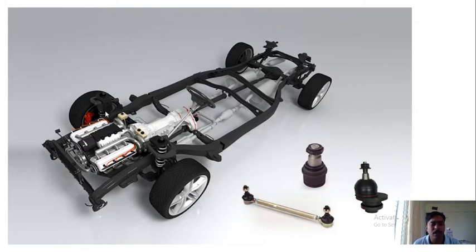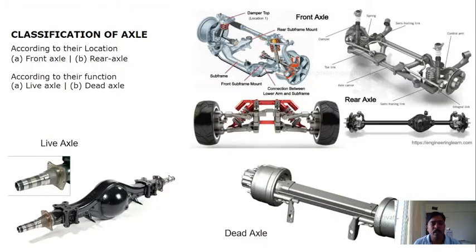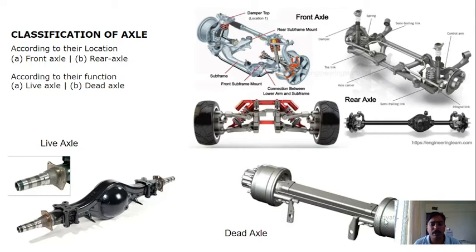If these are the front wheels and the axle on which these wheels are mounted, it will be a front axle — and in this case it is a dead axle. Now, the types of axle, that is the classification of axle: according to their location, it can be a front axle or rear axle. According to their function, it can be a live axle or dead axle. If power is given to the wheel by that axle, it is a live axle. If power is not given and the wheels are rotating around it, it is called a dead axle.